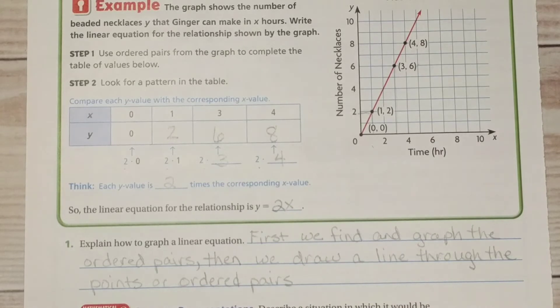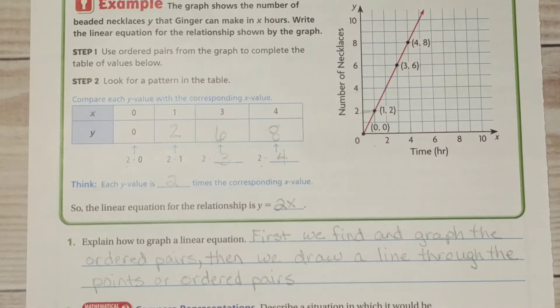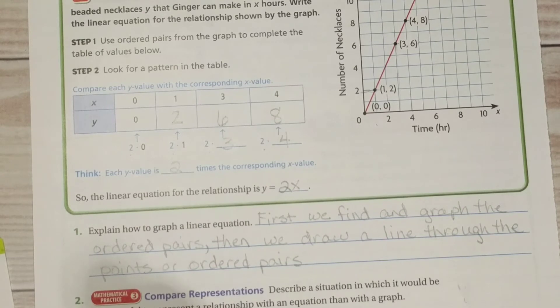All right compare representations describe a situation in which it would be more useful to represent a relationship with an equation than with a graph. So an equation can be used to find the value of the dependent variable for any value of the independent variable including values that might be difficult to read from a graph.